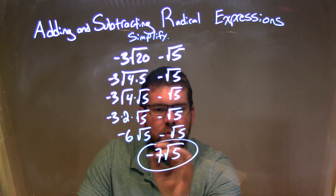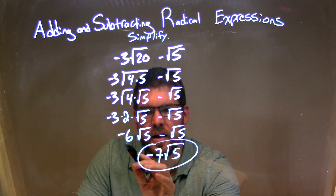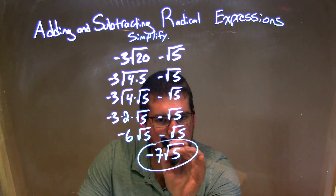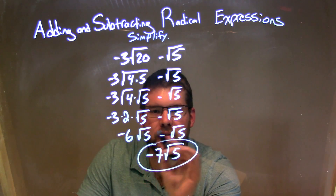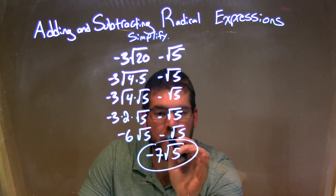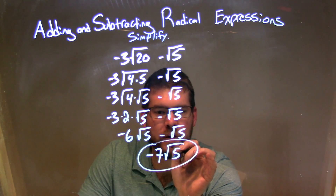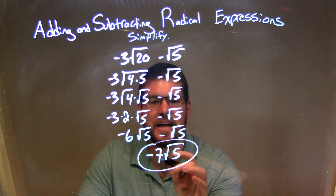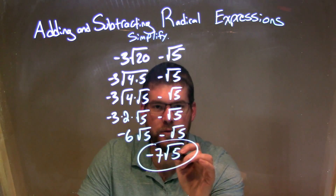So negative 6 times the square root of 5, minus the square root of 5. Same square root right there. Look to the number out in front — this one's negative 6, this one's a 1, and we're subtracting it. So negative 6 minus 1 is negative 7. Bring down the square root of 5. Our final answer is negative 7 times the square root of 5.